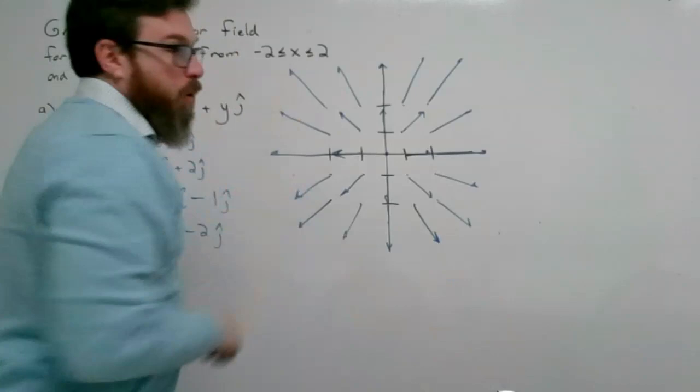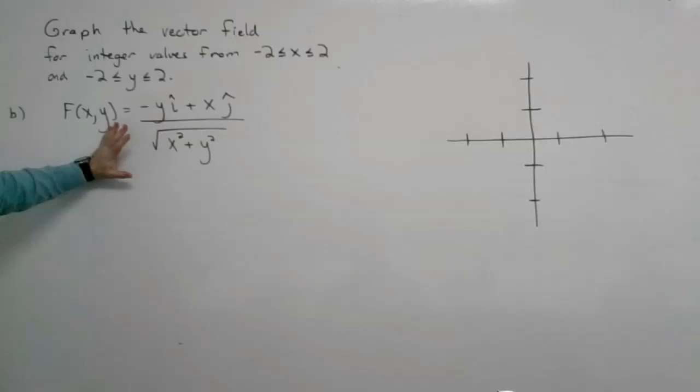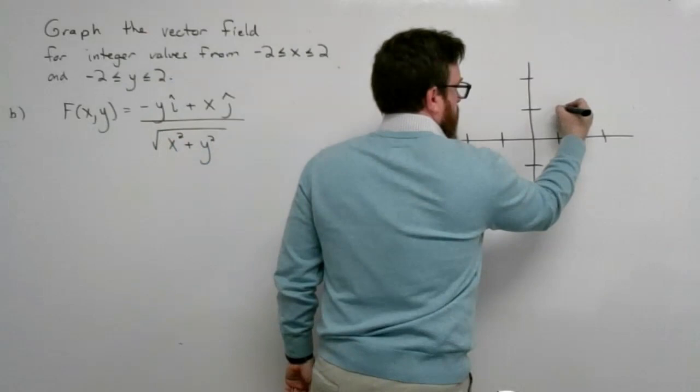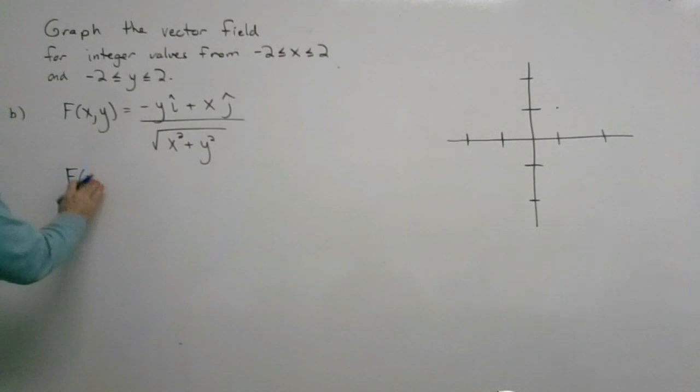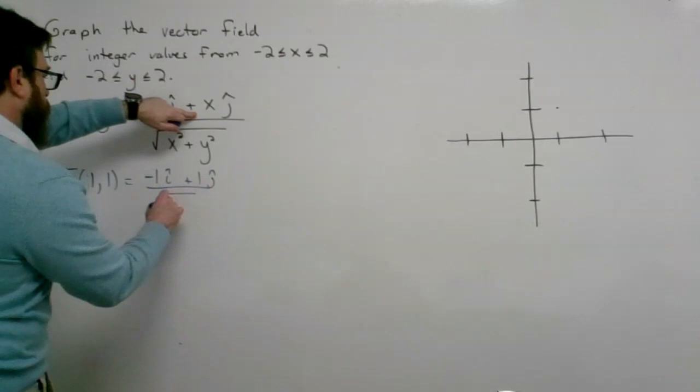One more example — a different vector field with a different orientation. Let's try the point (1, 1). To find what vector lives at (1, 1), x is 1 and y is 1, so I evaluate the field: y being 1 and x being 1, all over the square root of 1 squared plus 1 squared.